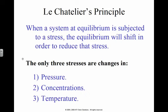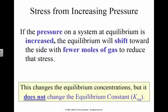The only three stresses that change equilibrium are pressure, concentrations, and temperature. If the pressure on a system at equilibrium is increased, the system will shift towards the side that favors fewer moles of gas to reduce that stress. This will not change the value of K.